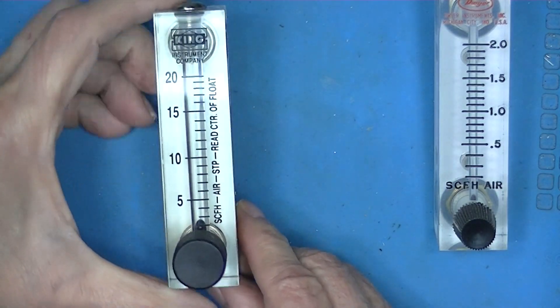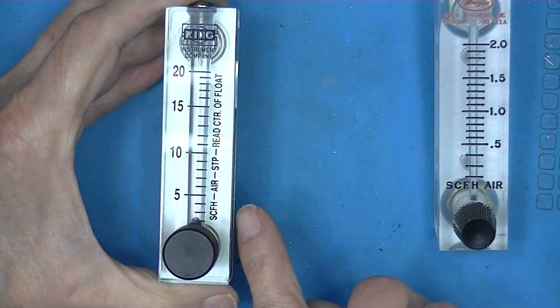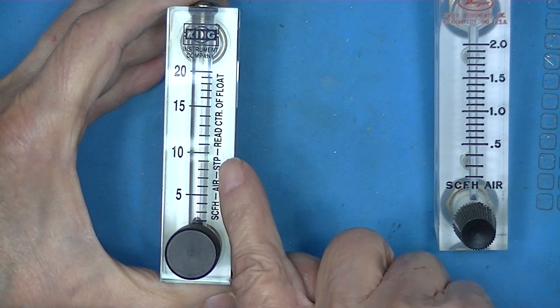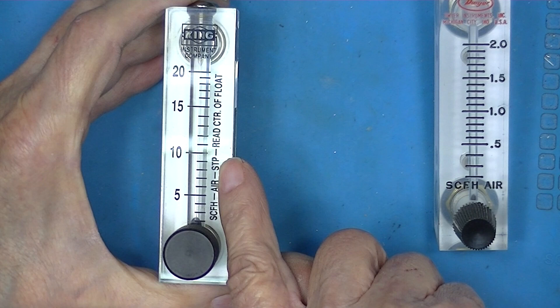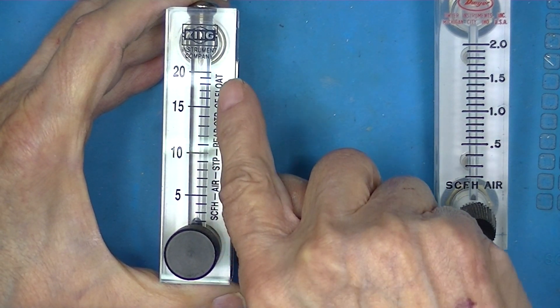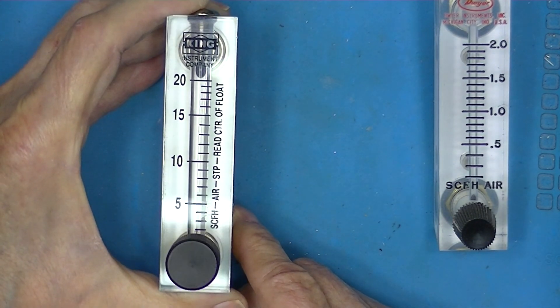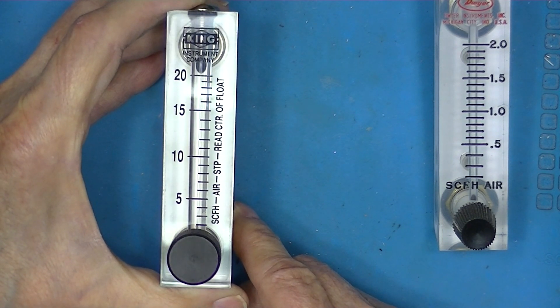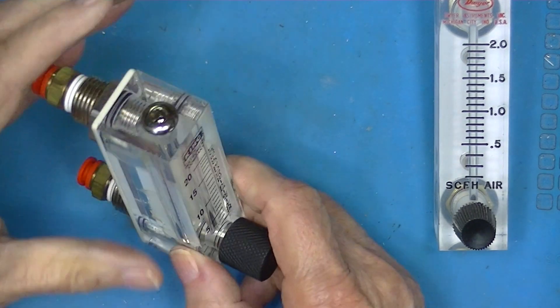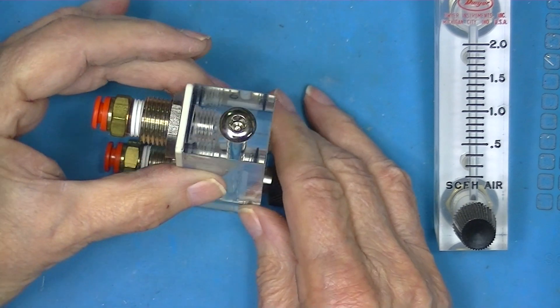Here's another one, very similar with a King Instrument label on it. It's also standard cubic feet per hour of air at standard temperature and pressure, and it instructs you to read to the center of the float.